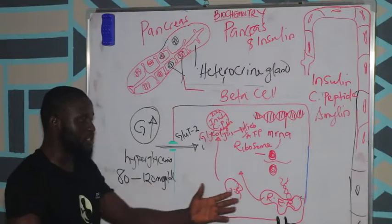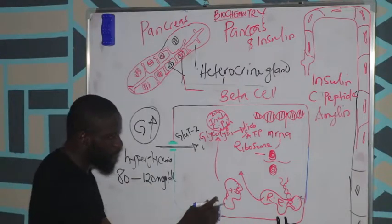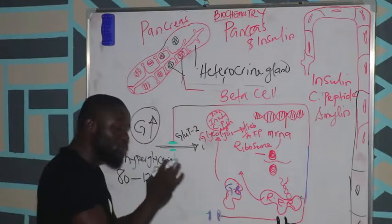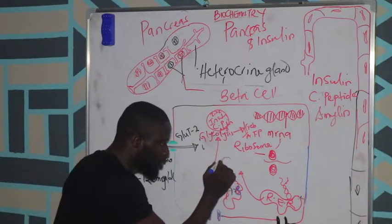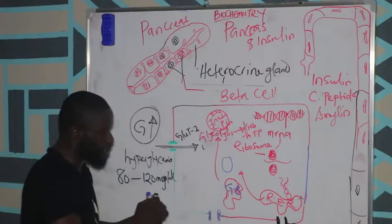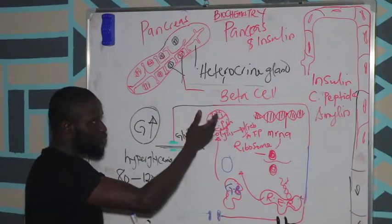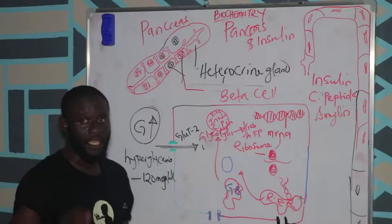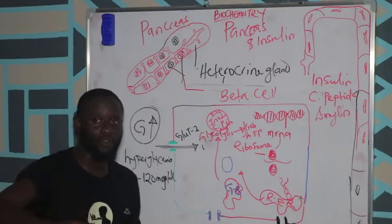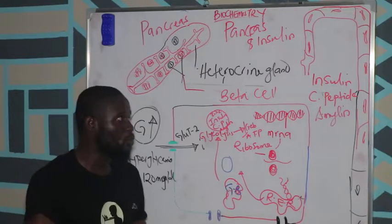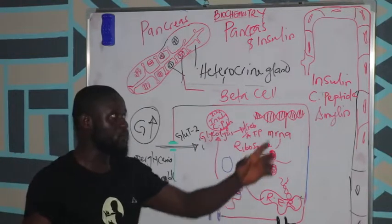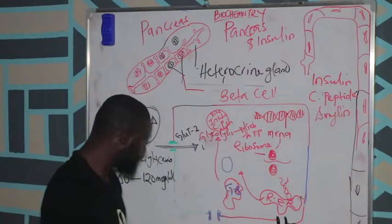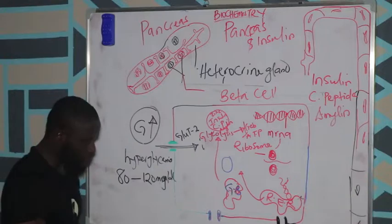Since we now know the modifications insulin production goes through, the Golgi body is responsible for packaging this into insulin vesicles. As I showed, you have insulin, C-peptide, and amylin. There's a reason I'm bringing up C-peptide: whenever you want to monitor the amount of insulin in the blood, you always use C-peptide as a marker, because whenever you're producing insulin, you're also producing C-peptide.